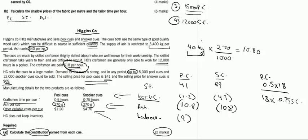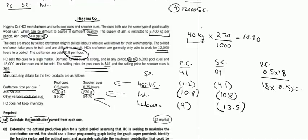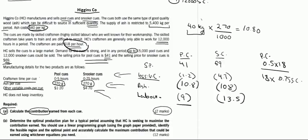There are no other variable costs in the question, so our contribution per snooker and pool cue will be: for pool cue it will be $41 minus $1.20 minus $10.80 minus $9, which is $20. And for snooker cues, it is $69 minus $4.70 minus $10.80 minus $13.50, which comes out to be $40. We are done with the first part of calculating the contribution earned from each cue. Our answer is $20 for pool cue and $40 for snooker cue.